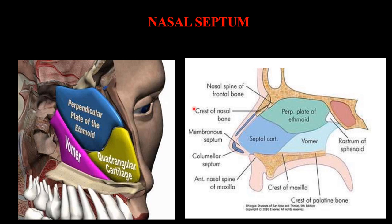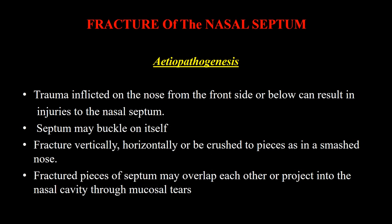The nasal septum is a separate structure from the external nose. It consists of the septal or quadrangular cartilage, which is connected postero-superiorly with the perpendicular plate of the ethmoid and postero-inferiorly with the vomer.